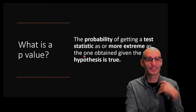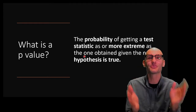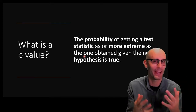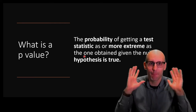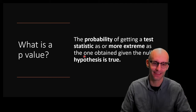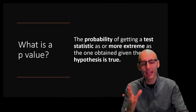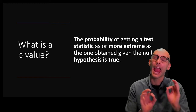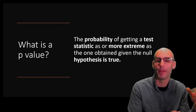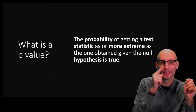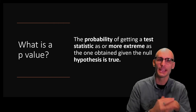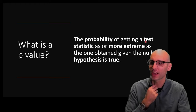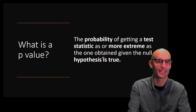Let's go over that definition again. I'm going to drill you with this definition over and over because it's so important that everyone has it built into their mental model so they understand science. The p-value is the probability of getting a test statistic as or more extreme as the one obtained, given the null hypothesis is true. We went over null hypothesis in the previous video, and in this video we're going to go over the test statistic.